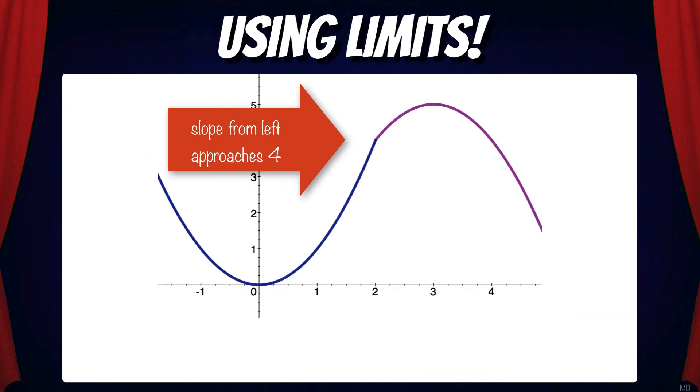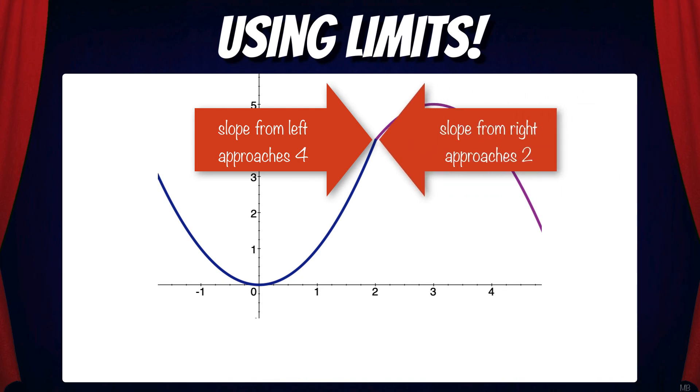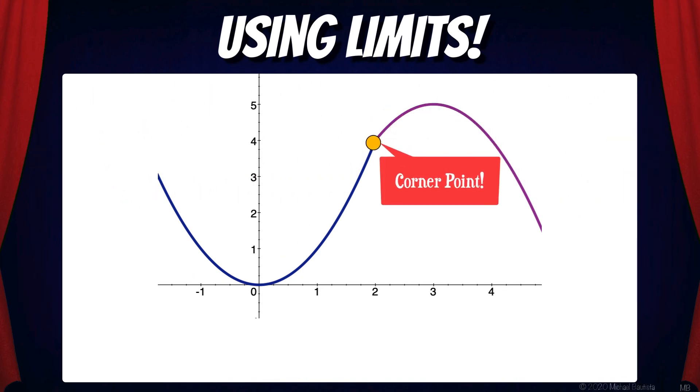Looking at this graphically, we can see that the slope from the left side approaches four, while the slope from the right side approaches two. Since the slopes from the left and the right don't match, we have a corner point on the function. And functions are not differentiable at corners.